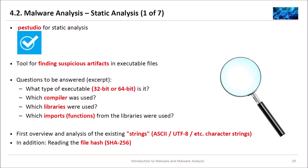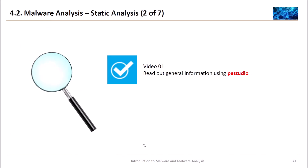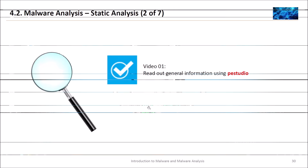Now let's begin with static analysis. For static analysis we use PEStudio — a tool for finding suspicious artifacts in executable files. Questions that can be answered using PEStudio are: what type of executable do we have (32-bit or 64-bit), which compiler was used, which libraries were used, which imports (functions from the libraries) were used, and we get an overview and analysis of existing strings (ASCII, UTF-8, etc.). We also read out the file hash. Strings are texts embedded in a program that a human can read.